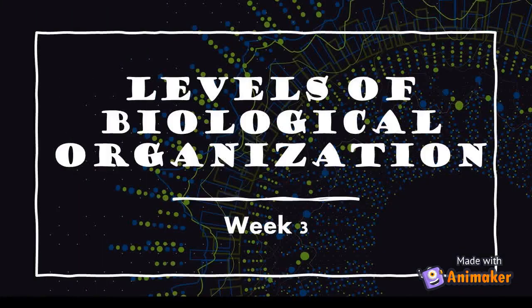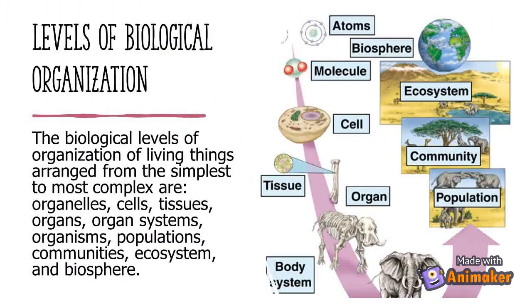This lesson will help you to understand and describe the different levels of biological organization from cell to biosphere. The biological levels of organization of living things, from simplest to most complex, are: organelles, cells, tissues, organs, organ systems, organisms, populations, communities, ecosystem, biomes, and biosphere.